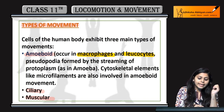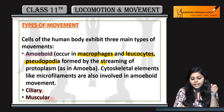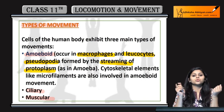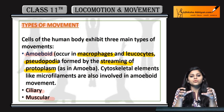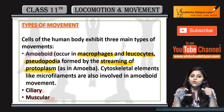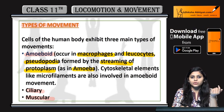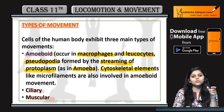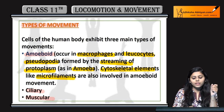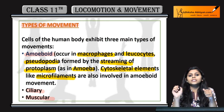Amoeboid movement ki special feature hai ki ismein pseudopodia present hoti hain, jo form hoti hain by the streaming of protoplasm. Pseudo means false aur podia means feet — false feet, jo prey capture karne ke liye aur movement ke liye use hoti hain. Example: amoeba. Cytoskeletal elements jaise micro filaments amoeboid movement mein involve hote hain.